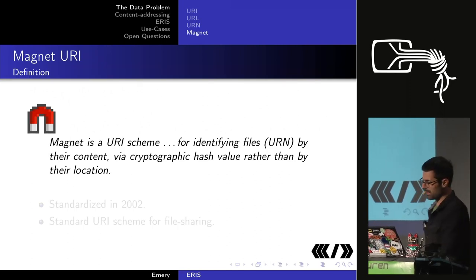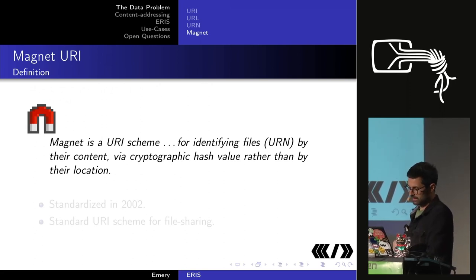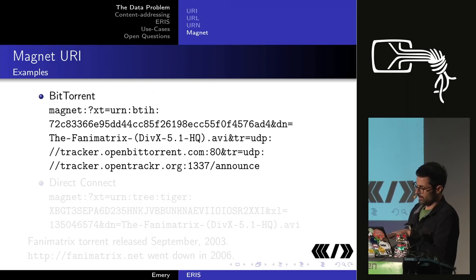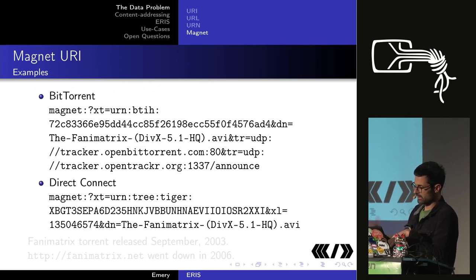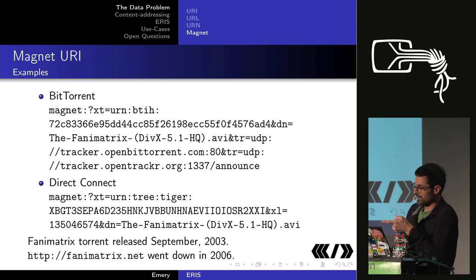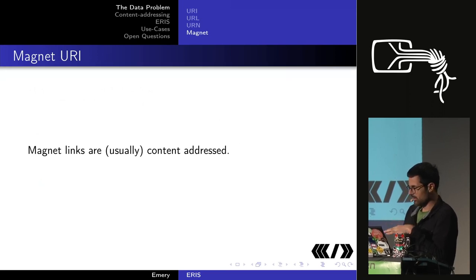Then there was Magnet, which did concretely refer to very specific data. It was a de facto standard from 2002, used for file sharing — for BitTorrent and direct connect. The Phantom Matrix example is good: the torrent was released in 2003, the website went down in 2006, but this torrent has been active for 18 years. Magnet links are usually content-addressed, but not always.